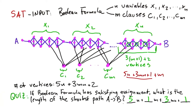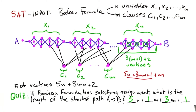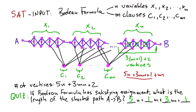We are almost done. We have shown that if the Boolean formula has a satisfying assignment, then the length of the shortest path from A to B that visits all vertices has length 5N plus M plus 3MN plus one, where N is the number of variables and M is the number of clauses. Now we also have to show the other direction: if there is a shortest path between A and B of length 5N plus M plus 3MN plus one, then the Boolean formula can be satisfied — so we have a satisfying assignment.